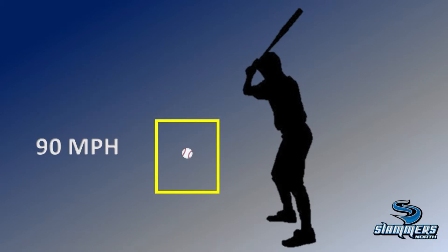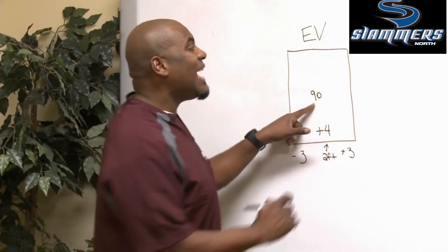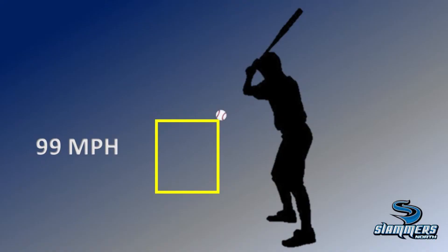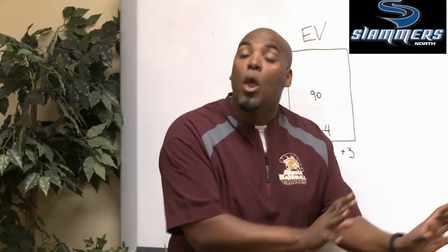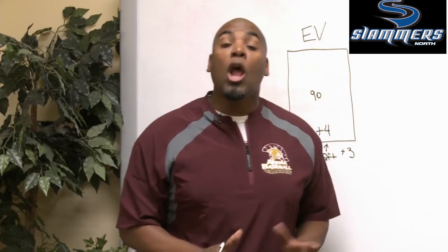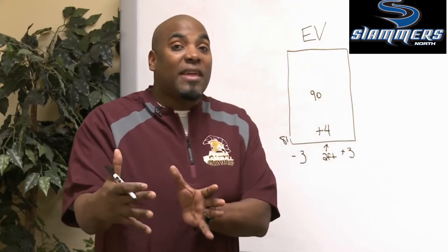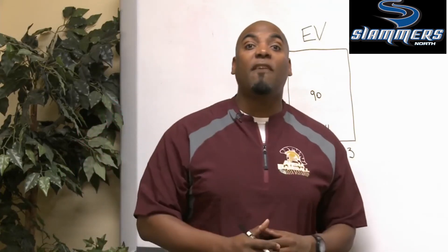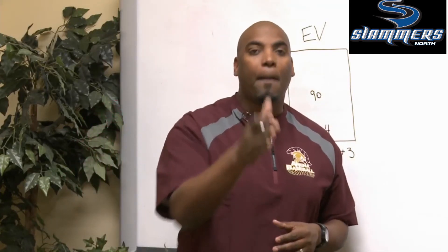So this 90-mile-an-hour fastball changes based on its location. Thrown up and into the hitter, it acts like 99 miles an hour. This same 90-mile-an-hour fastball thrown down and away acts like only 81. Simply by changing the location, we've also changed the effective velocity, throwing off the timing of the hitter and allowing him to hit the ball softly — which is our primary objective.